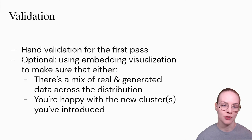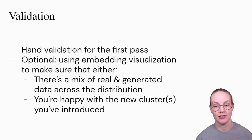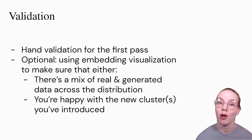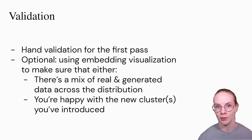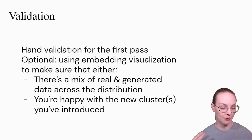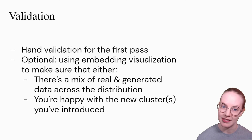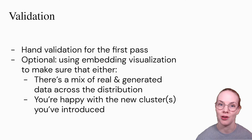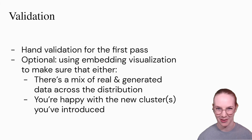So if you've generated some data and would like to do a validation to make sure you're not putting something in your system that will make it perform worse, my general recommendation is to do hand validation. Look at the data — you may even use an annotation tool like Prodigy to do a quick up/down vote about whether or not a particular input fits the intended intent. If you would like to do a little bit more validation, you could use an embedding visualizer like the one provided by Cohere to make sure that within different clusters, you're having a mix of real and generated data. Ideally you don't want to generate very tight clusters of data that may skew your model's ability to handle the wide diversity of ways people express themselves when talking to chatbots.